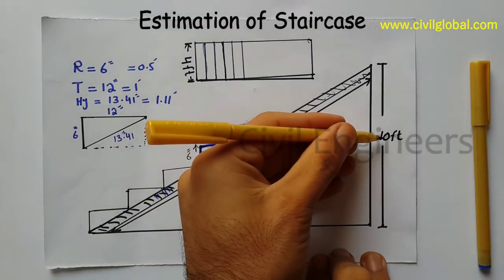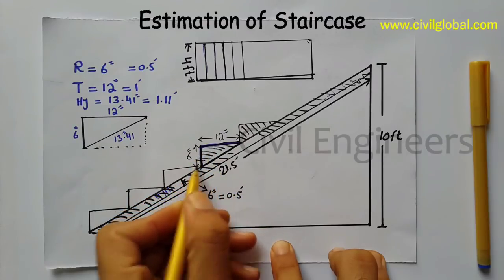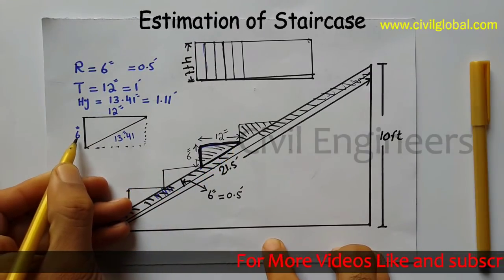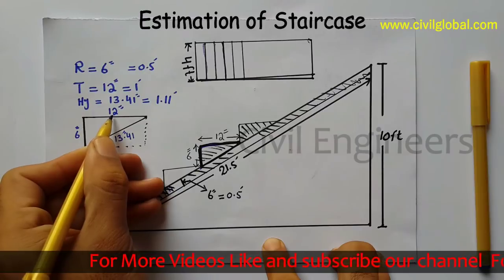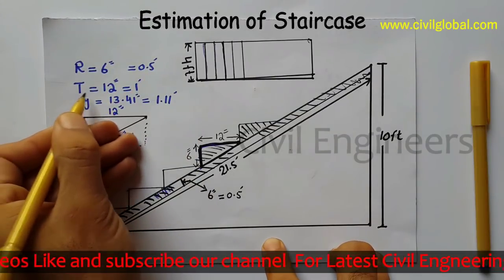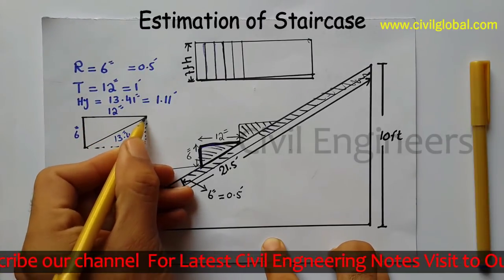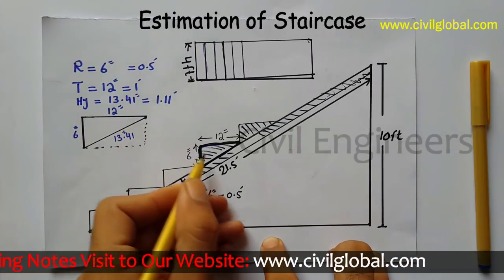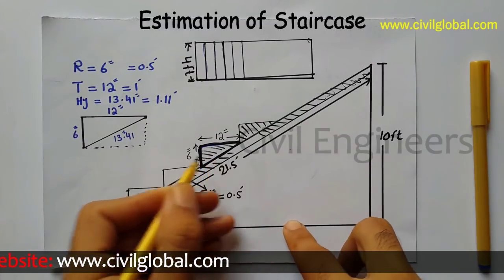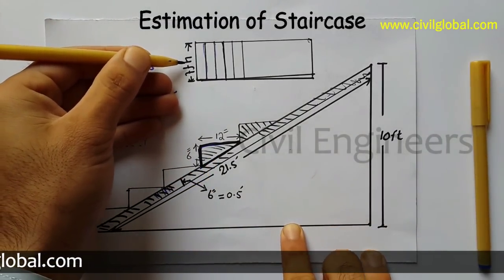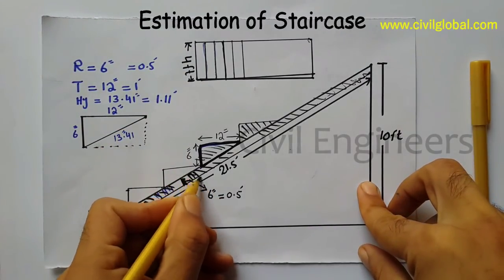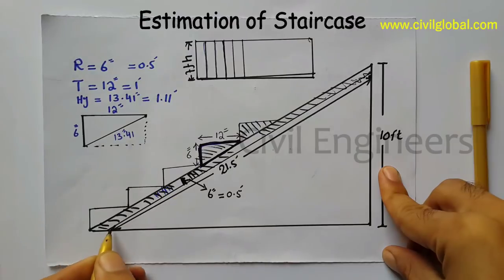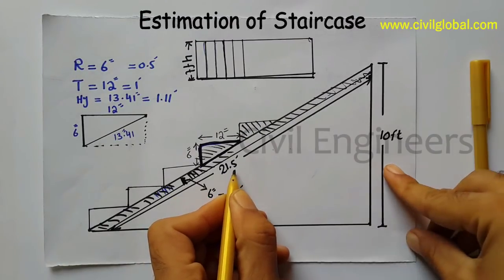I have to design the staircase to a height of 10 feet. These are the steps — one, two, three, four, etc. I have taken a cross-section from this section. The riser height is 6 inches equal to 0.5 feet, the tread is 12 inches equal to 1 foot, and the hypotenuse is 13.41 inches equal to 1.11 feet. The breadth of this staircase is 4 feet, waist thickness is 6 inches equal to 0.5 feet, and the length of the waist from top to bottom is 21.5 feet.